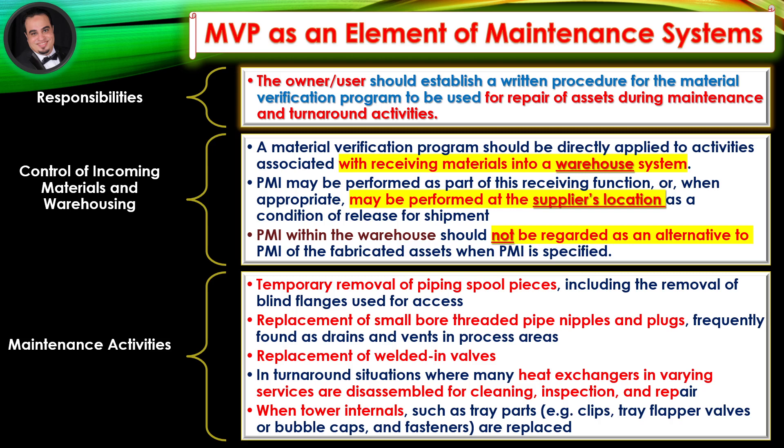Maintenance activities covered by the program include: temporary removal of piping spool pieces including the removal of blind flanges used for access; replacement of small bore threaded pipe nipples and plugs, frequently found as drains and vents in process areas; replacement of welded-in valves; in turnaround situations where many heat exchangers in varying services are disassembled for cleaning, inspection, and repair; and when tower internals such as tray parts — for example clips, tray flapper valves or bubble caps — and fasteners are replaced.